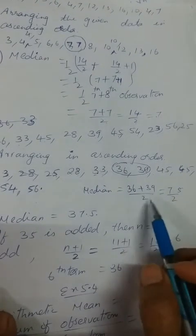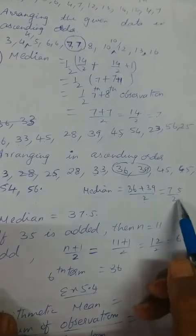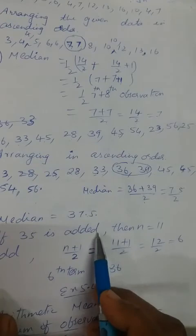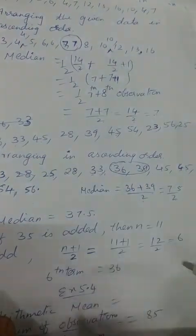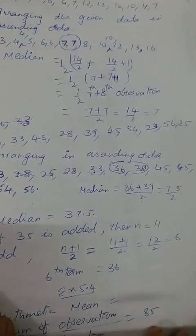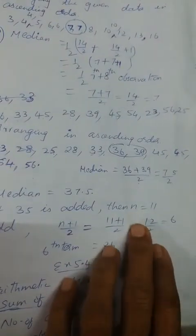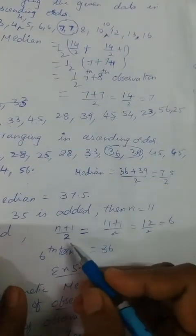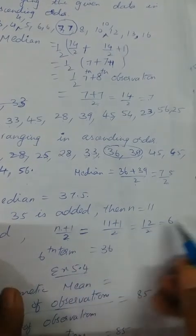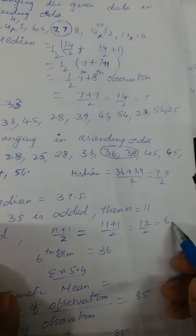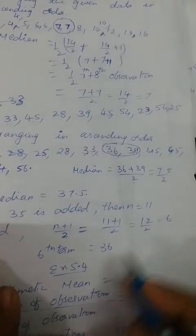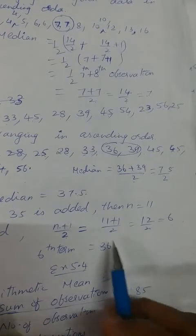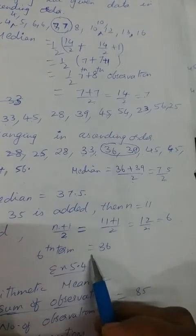So take the average: 36 plus 39 divided by 2 = 75 by 2 = 37.5. That is the median. Now if 35 is added, there are 11 observations — odd number. So n+1 by 2 = 12 by 2 = 6th observation. The 6th observation is 36. So the new median is 36.